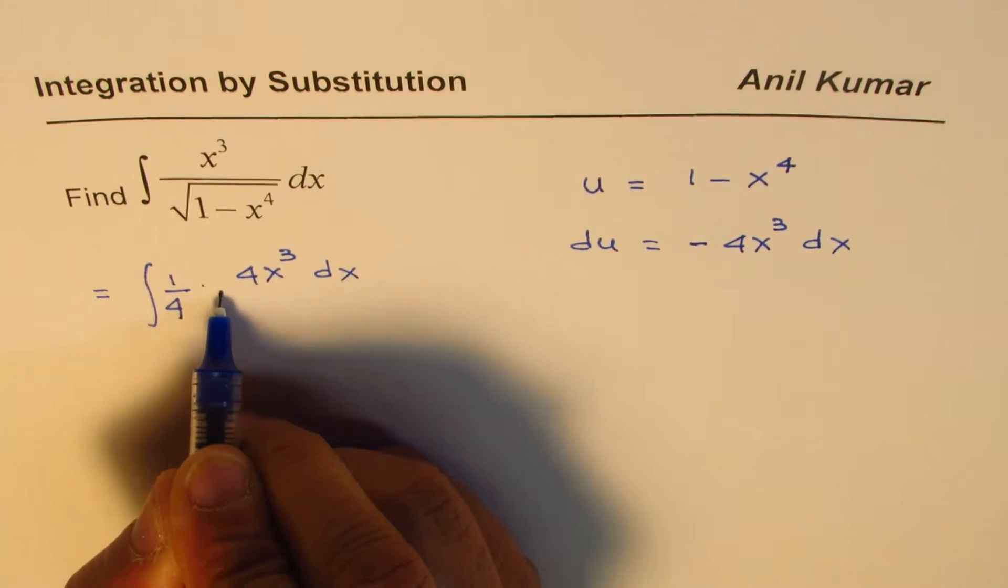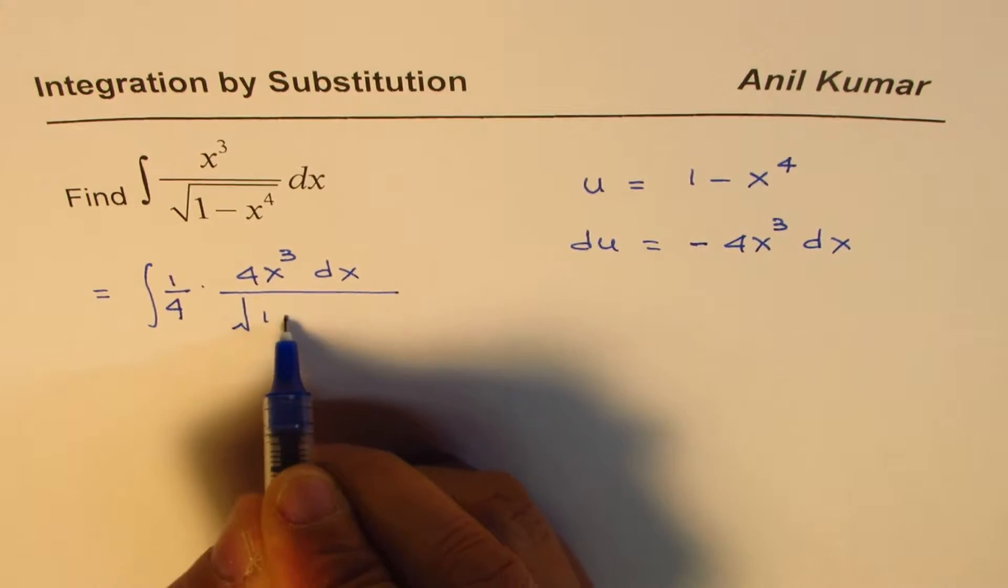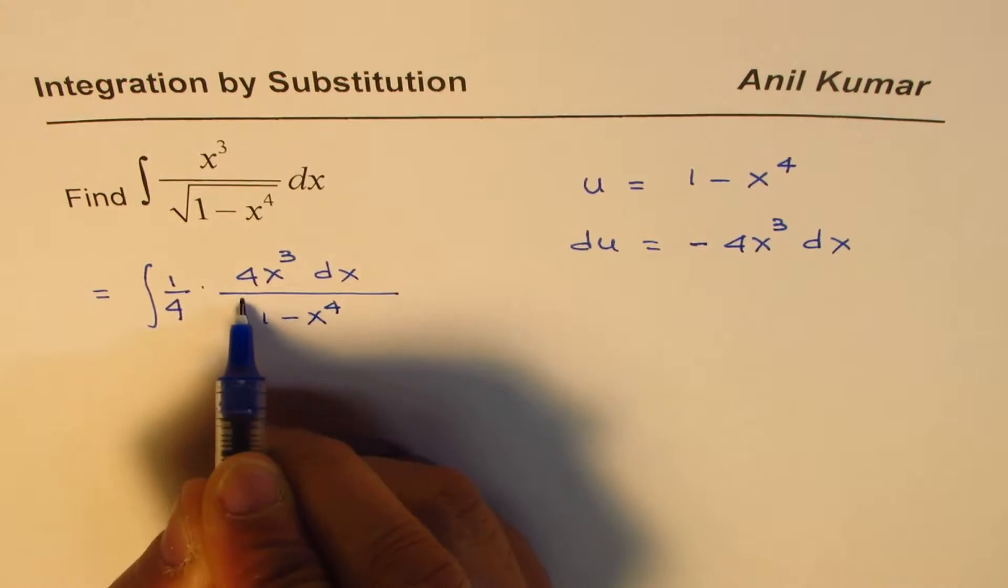over square root of 1 minus x to the power of 4. Is that okay?